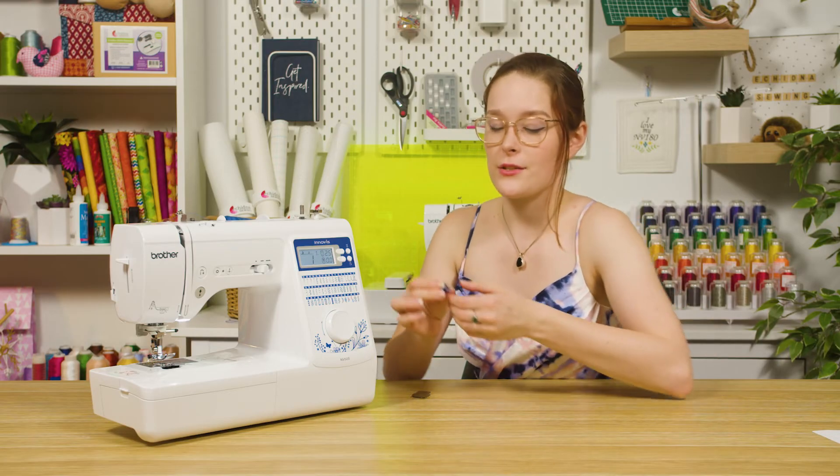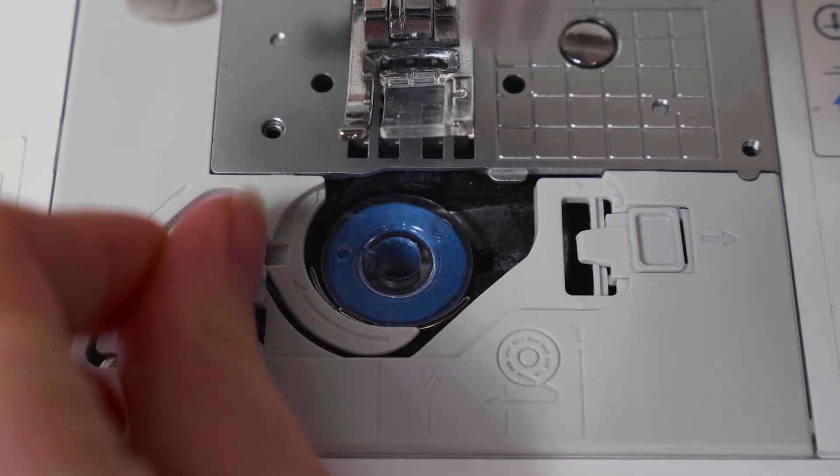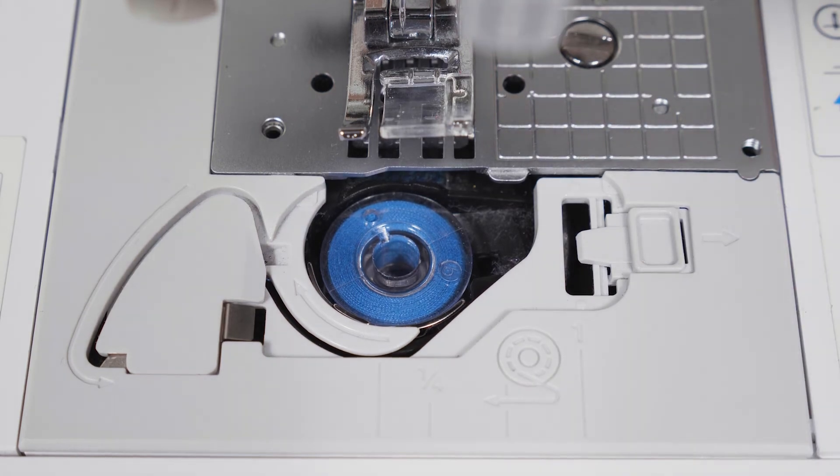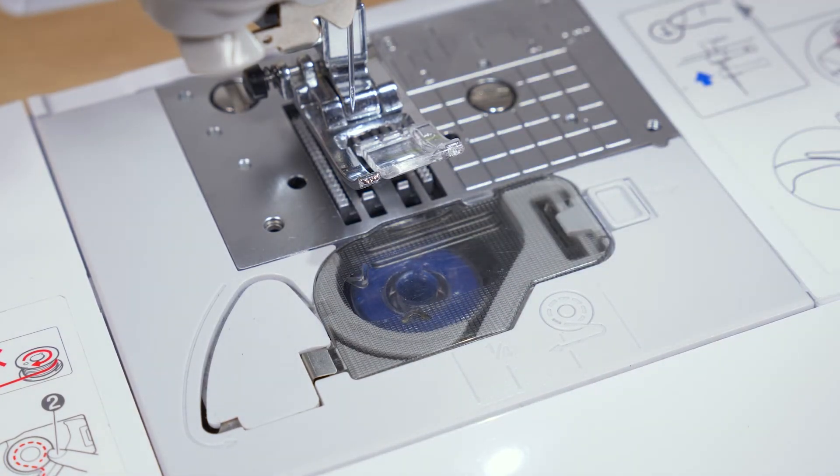Now the NV50S features a quick-set drop-in bobbin. All you need to do is place your bobbin into the bobbin case and thread it through the indicated path, which will cut off the thread at the end. Now you can put your cover back on and your bobbin is ready to go.